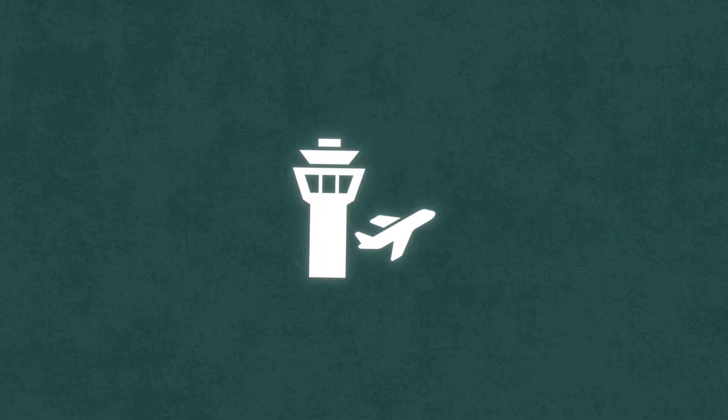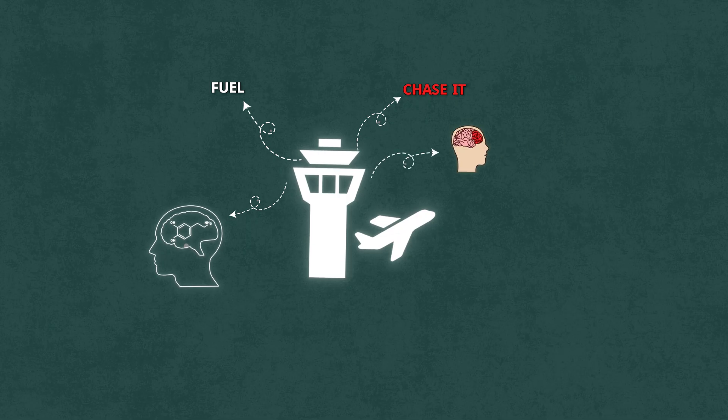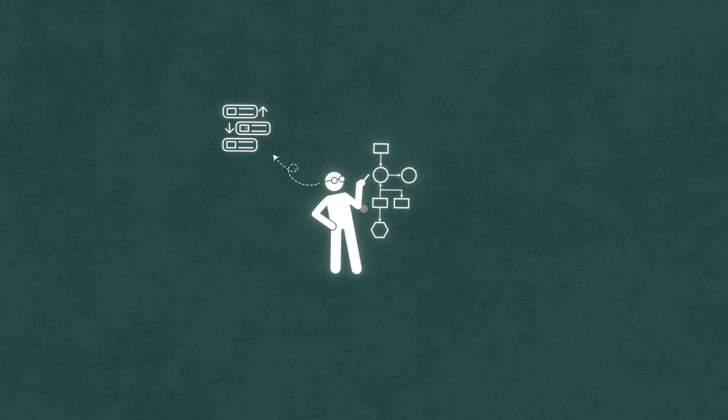Think of it like an air traffic control tower. The salience network already told you what's important. The dopamine system is giving you endless fuel to chase it. But without the prefrontal cortex, you're just a rocket with no guidance. This system helps you plan, prioritize, and here's the big one, say no.